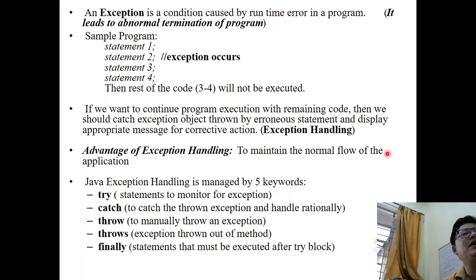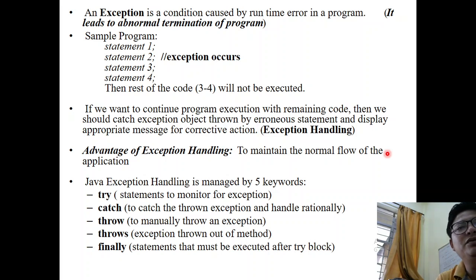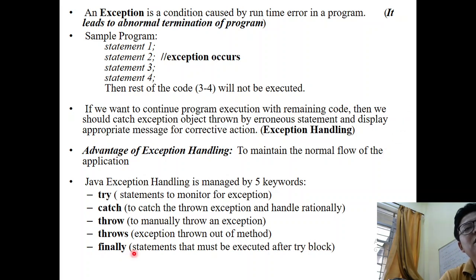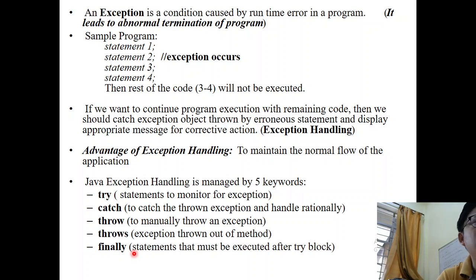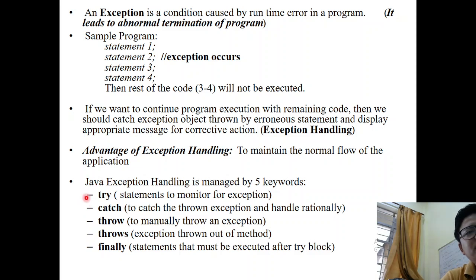While writing Java exception handling programs, we use five keywords: try, catch, throw, throws, and finally. Try means if you want to monitor a particular statement you're suspicious about, you place that statement inside the try block. When an exception is encountered in a statement kept in the try block, an object is created that contains the message about what kind of error occurred.